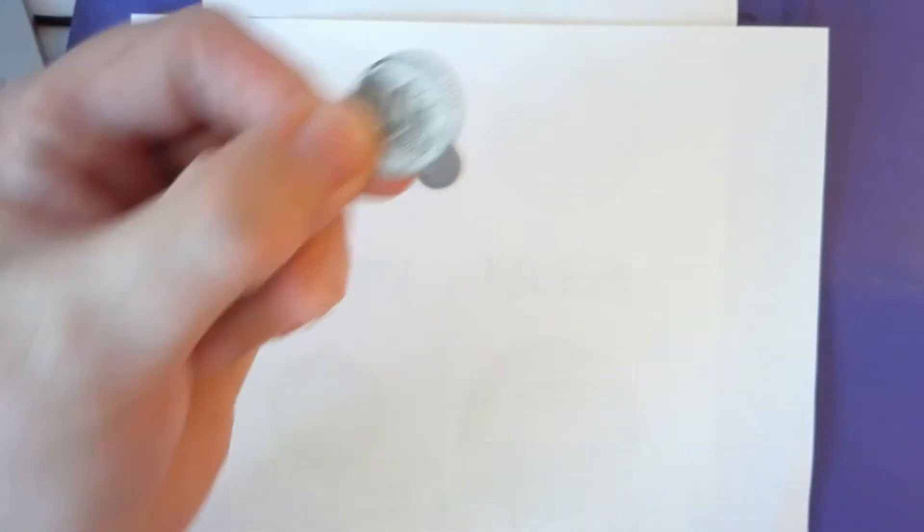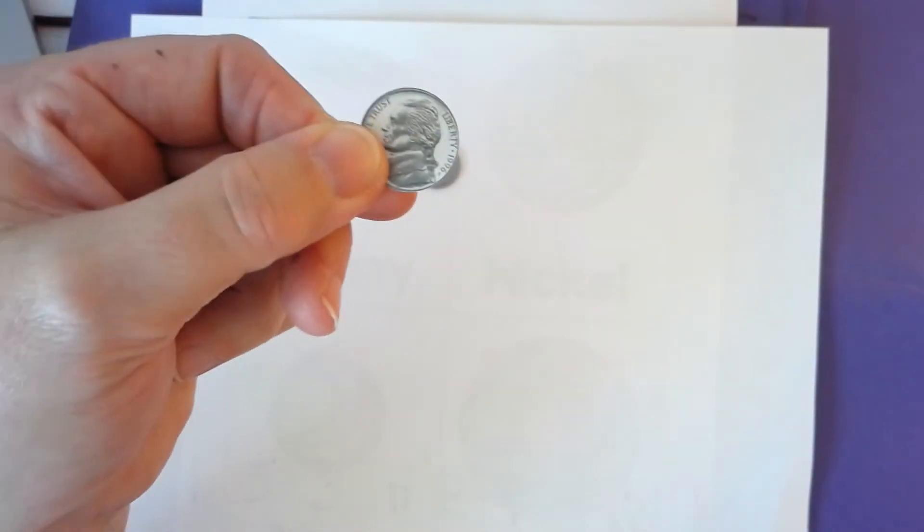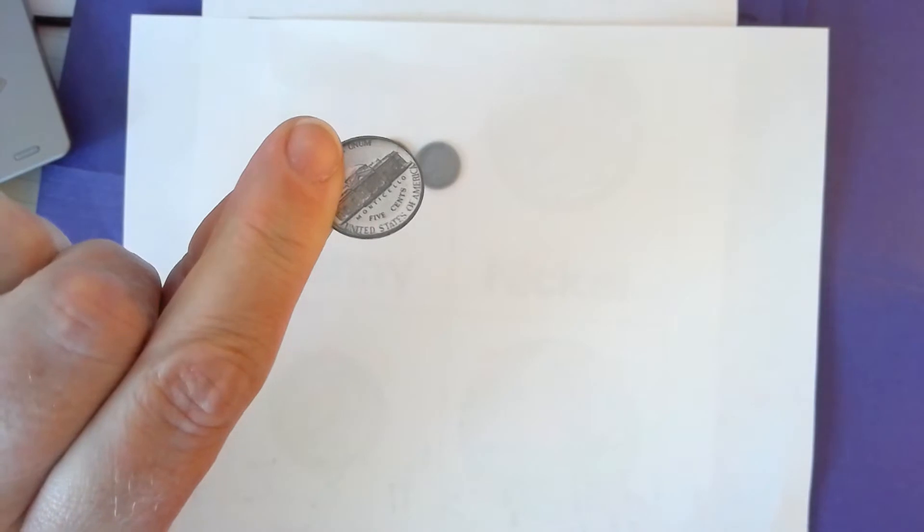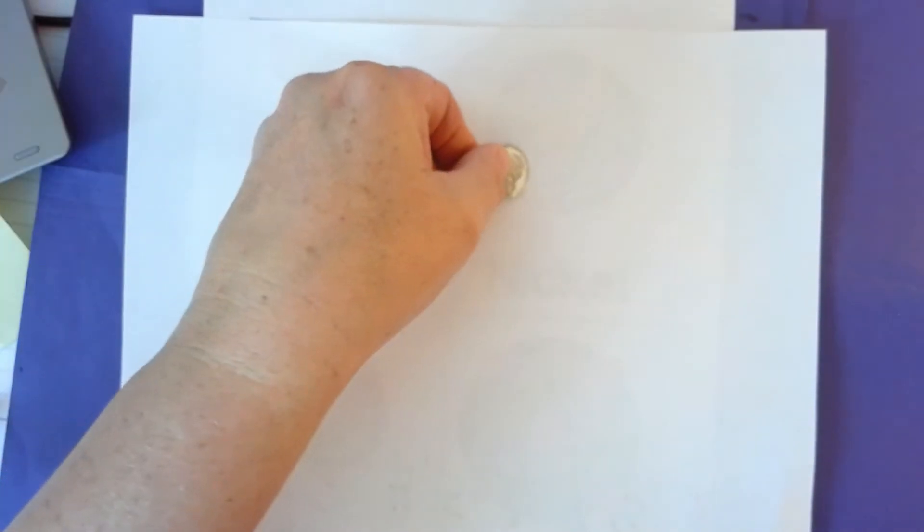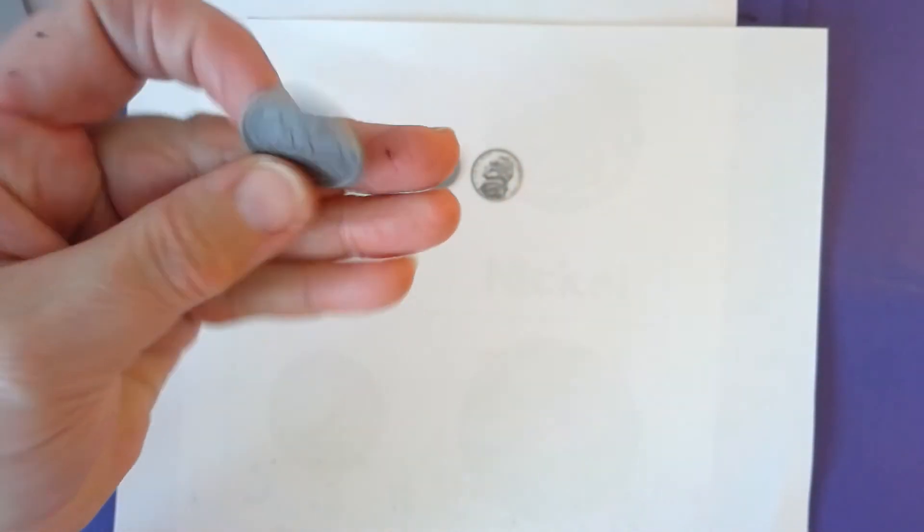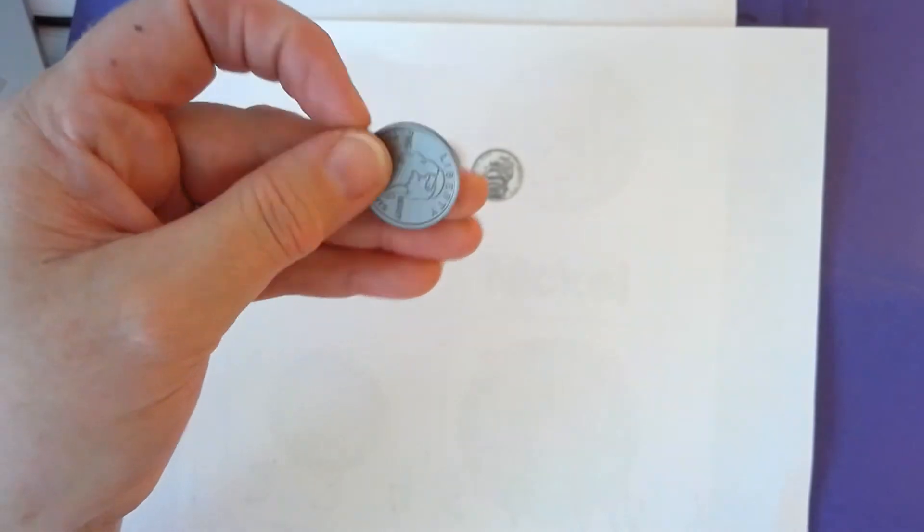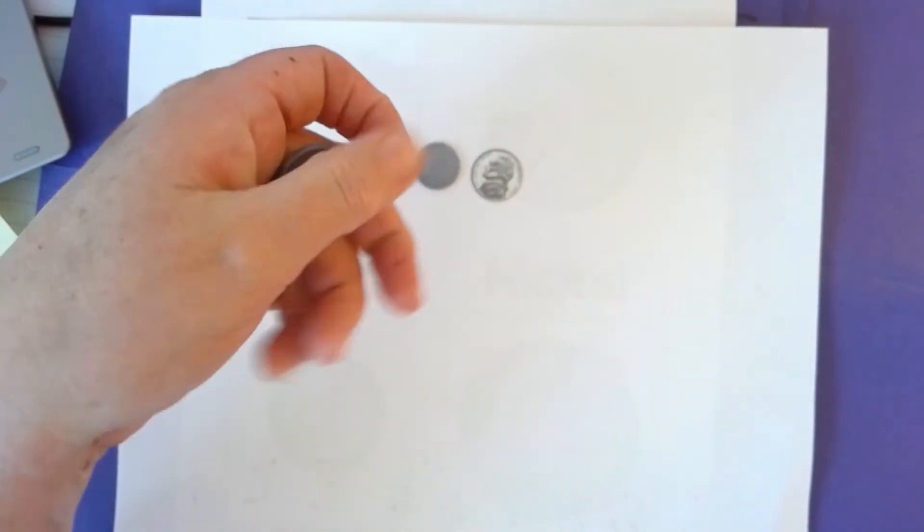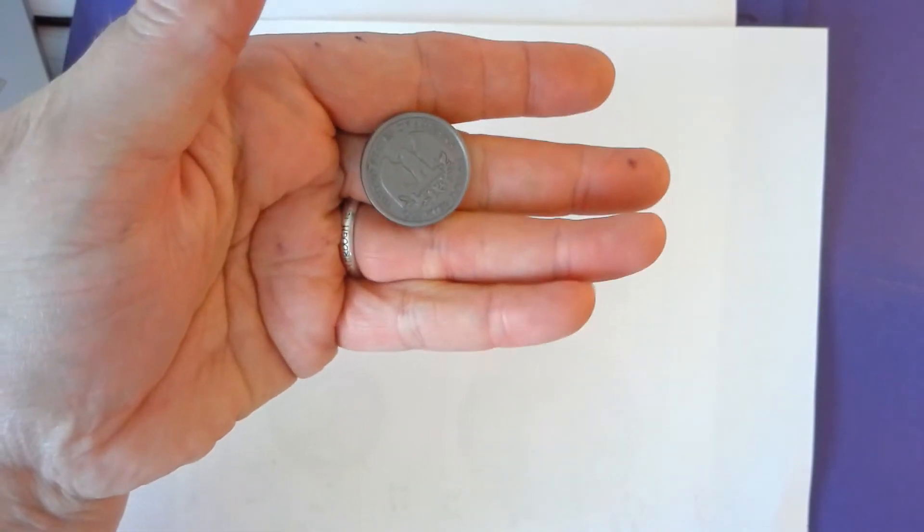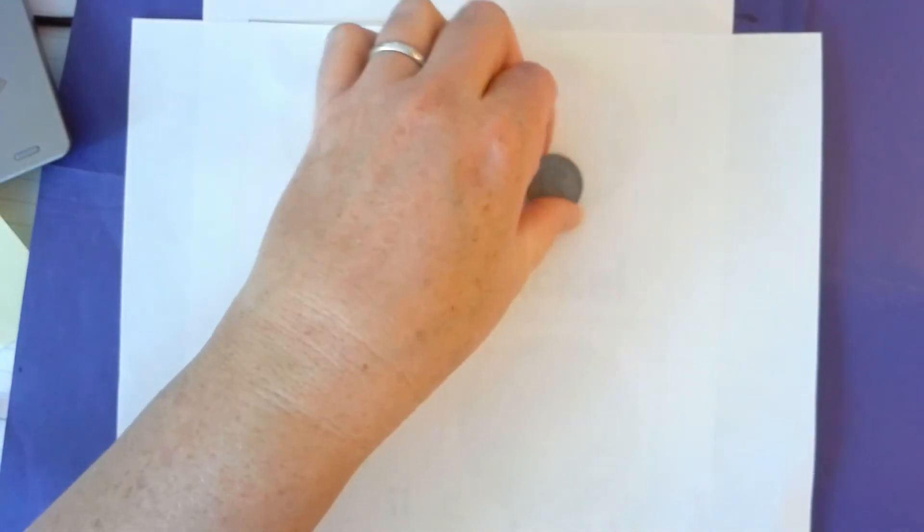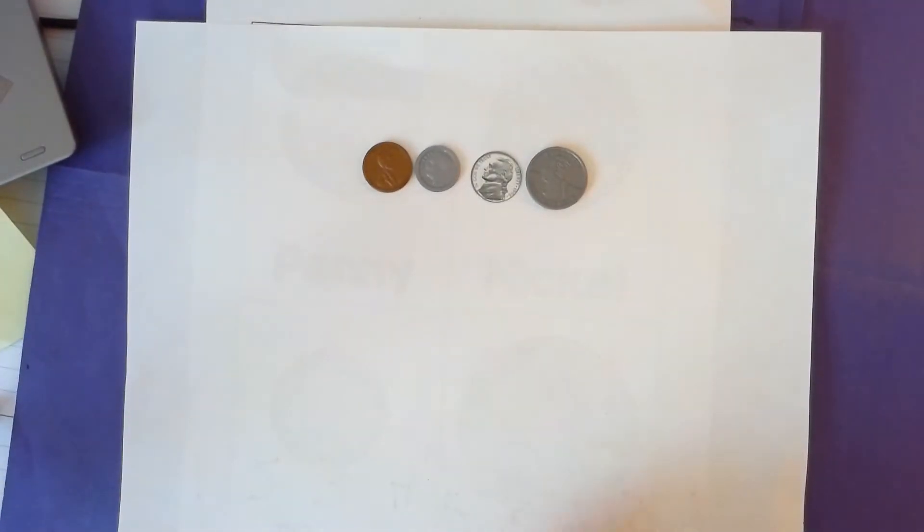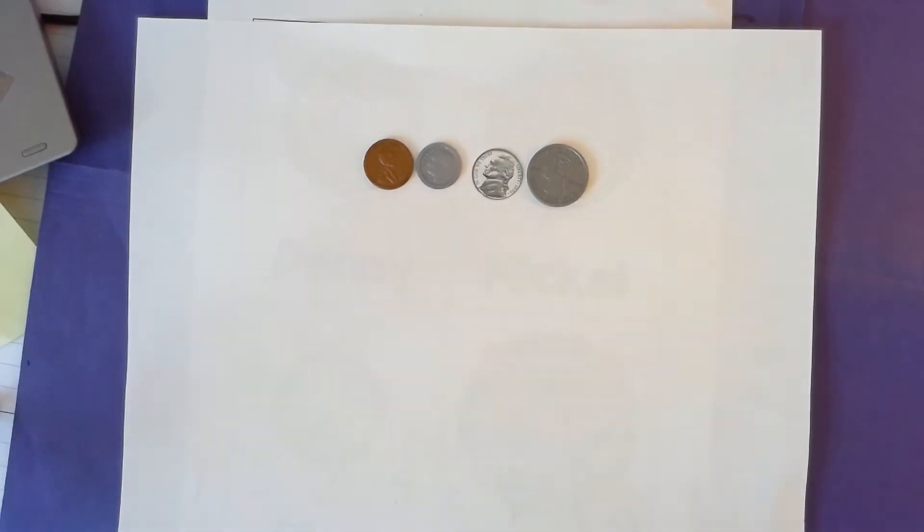This is a nickel. That's the back side of the nickel. And this looks like a quarter. And then this is the back side of the quarter. So you can see the different sizes of each coin.